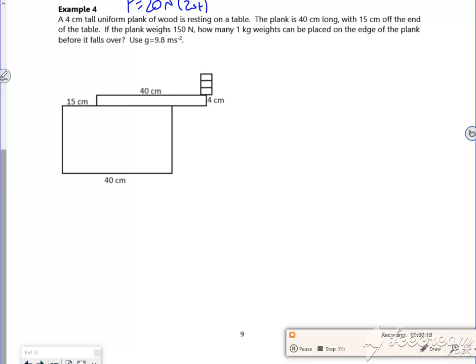It says a 4 cm tall uniform plank of wood is resting on a table. The plank is 40 cm long with 15 cm off the end of the table. So I know that this distance from here to here is 0.15 meters.